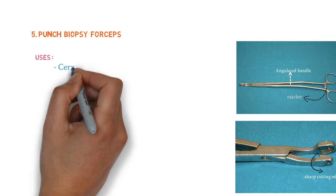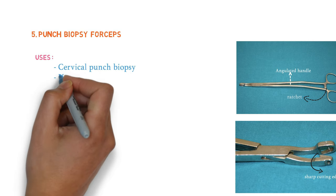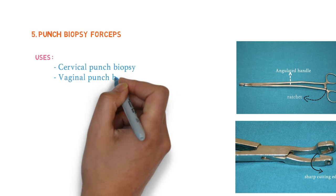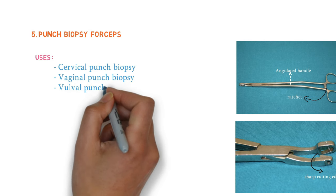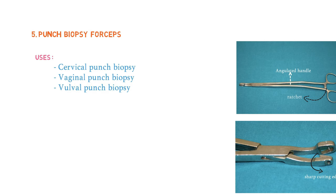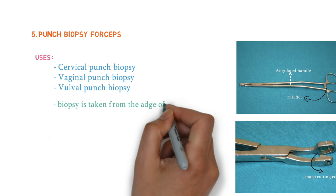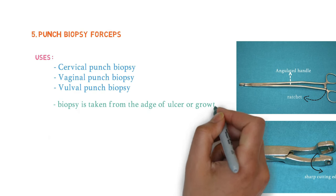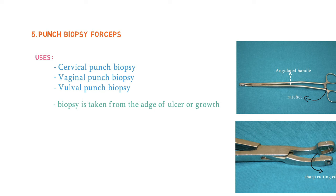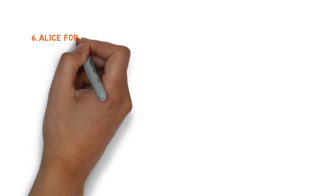The uses of punch biopsy forceps are: cervical punch biopsy, vaginal punch biopsy, and vulval punch biopsy. Biopsy is taken from the edge of an ulcer or growth. If any bleeding occurs, apply pressure, cauterize, or take figure-of-eight sutures with chromic catgut. This is all about punch biopsy forceps.